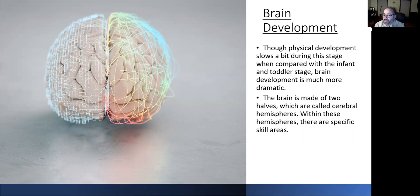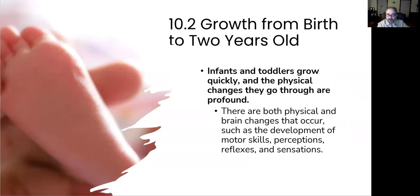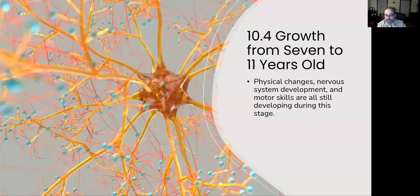Additionally, the myelin sheath — which insulates, surrounds, and improves the efficiency of neurons — develops rapidly during these years. Now moving into growth from seven to 11 years of age. Physical development, nervous system development, and motor skills are all still developing during this stage. Middle childhood is from seven to 11 and is divided into two parts: early middle, from seven to nine, and late middle, from 10 to 11.